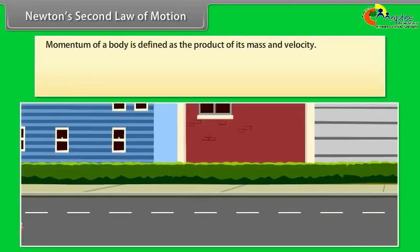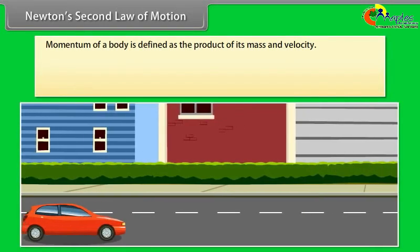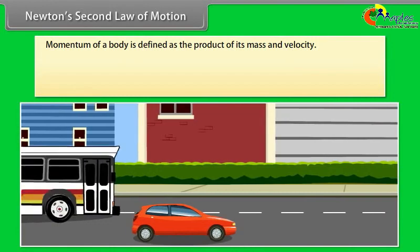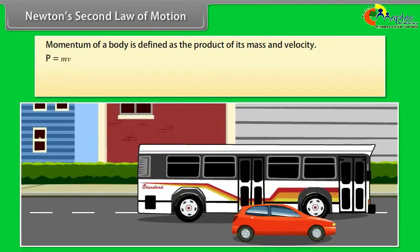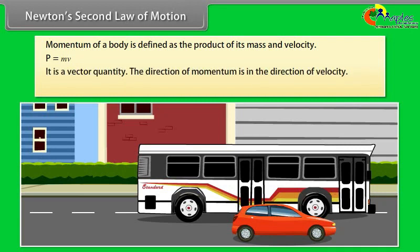We will first talk about momentum. Momentum of a body is defined as the product of its mass and velocity: P = m × v. It is a vector quantity. The direction of momentum is in the direction of velocity. Its SI unit is kilogram metre per second.